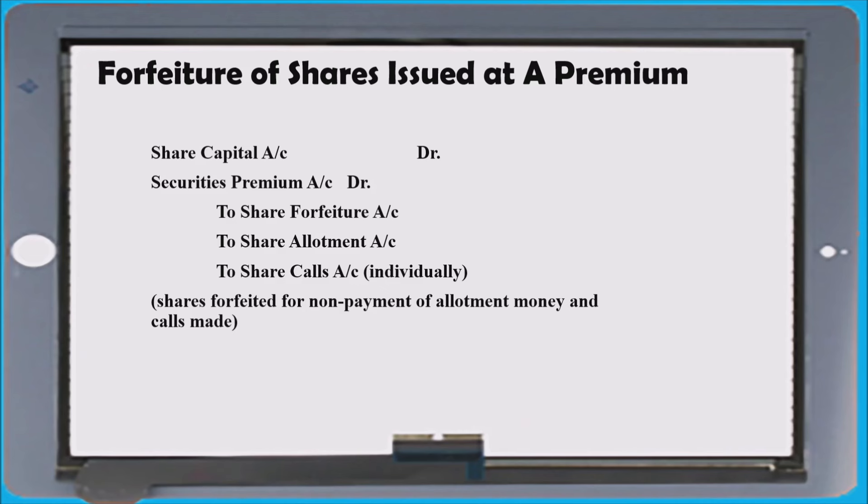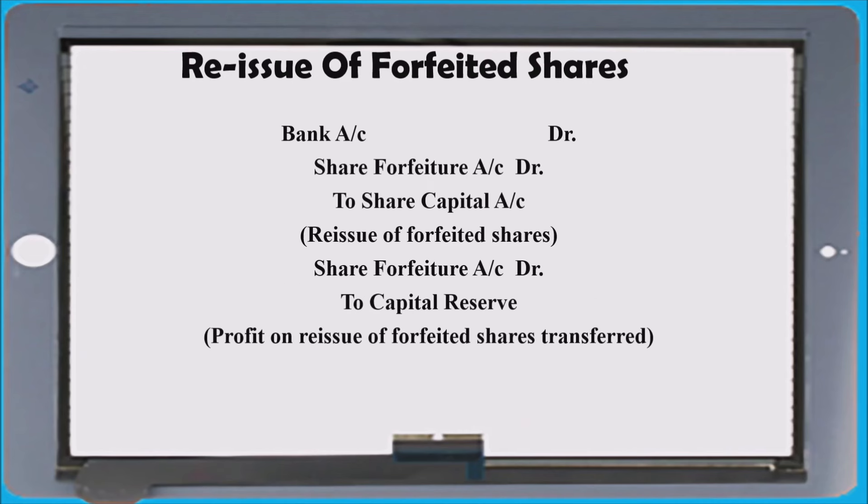Please remember securities premium will be credited at the time of forfeiture. Reissue of forfeited shares — different cases are there. If reissued at par: bank to share capital. If reissued at a discount: bank, share forfeiture to share capital. If reissued at premium: bank to share capital, to securities premium. And the last entry: share forfeiture to capital reserve. Please keep in mind all the entries.